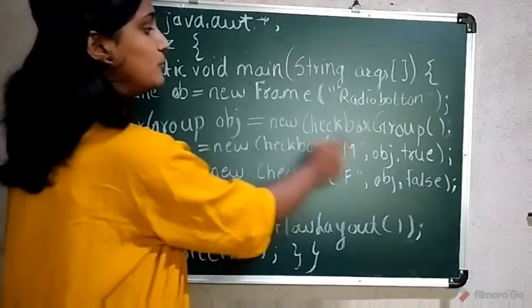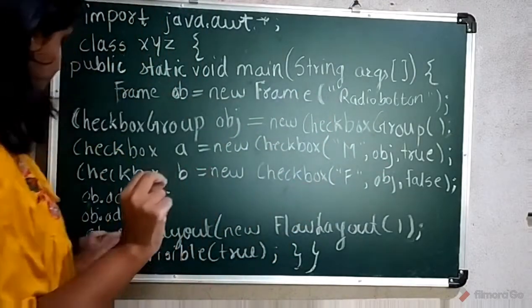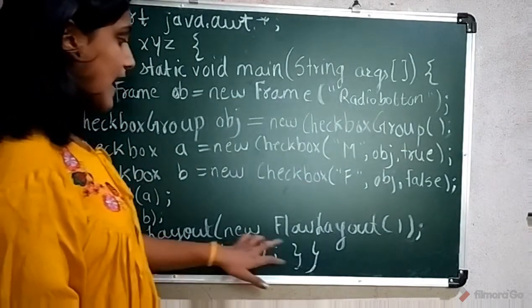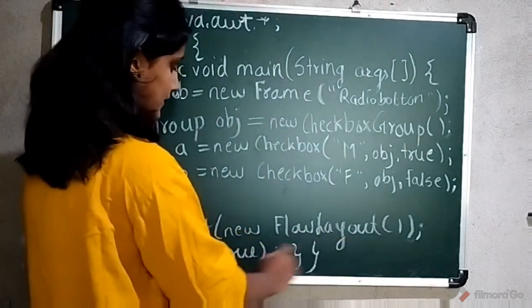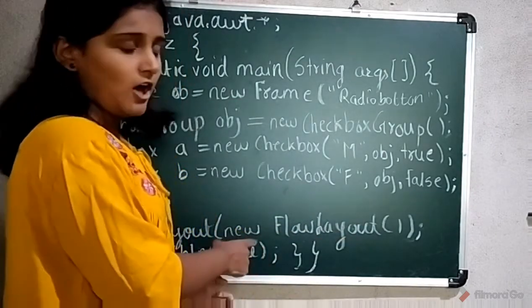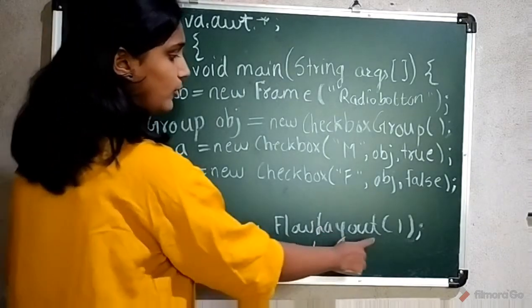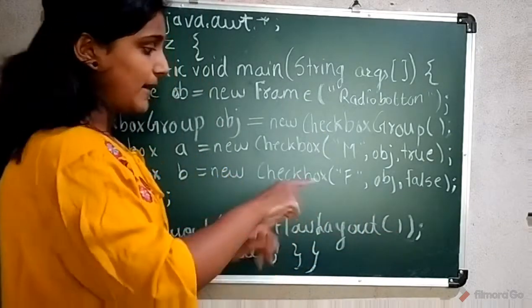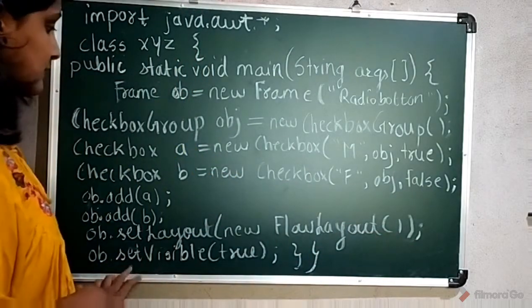Here set layout, I have passed flow layout. I have created the constructor of flow layout using the new keyword. I have created the object new FlowLayout() and closed the set layout.